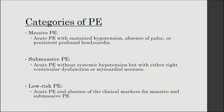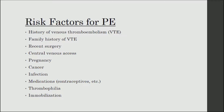To start out, we are going to define the possible categories of pulmonary embolism, or PE for short. First, we have massive PE, which is defined as an acute PE with sustained hypotension, absence of pulse, or persistent profound bradycardia. Hypotension here is regarded as a systolic blood pressure of less than 90, and profound bradycardia is regarded as a pulse of less than 40. Next, we have submassive PE, which is defined as an acute PE without systemic hypotension but with either right ventricular dysfunction or myocardial necrosis. Last, we have low risk PE, which is essentially any acute PE that does not fit the criteria for massive or submassive PE.